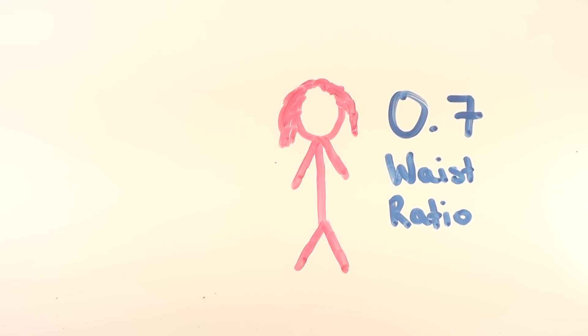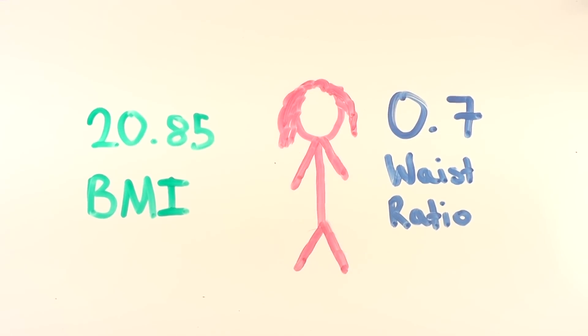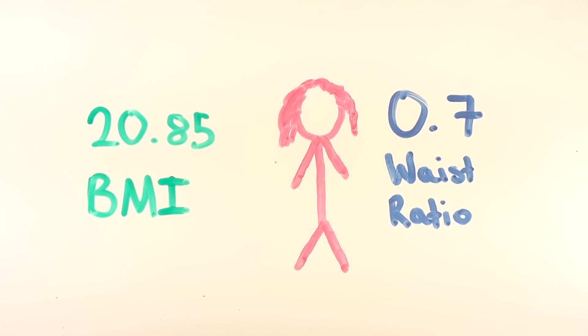Researchers have found that a body mass index of 20.85 is the most attractive for women, as it indicates that the woman is most likely in good health and has good reproductive potential.